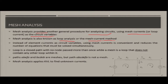Instead of using element currents as circuit variables, we use mesh currents. This is convenient and reduces the number of equations that must be solved simultaneously. We are not using branch currents as variables but mesh currents, because in branches the current might be different, but in a particular loop the current values are i1 and i2.